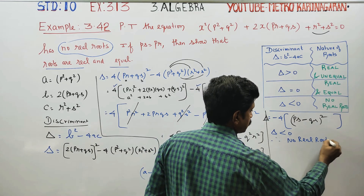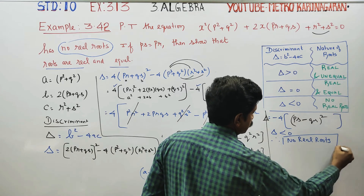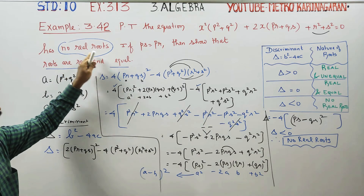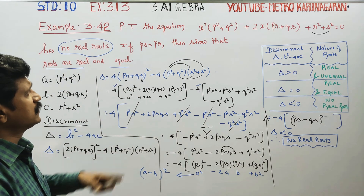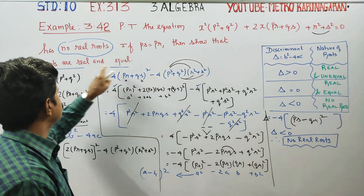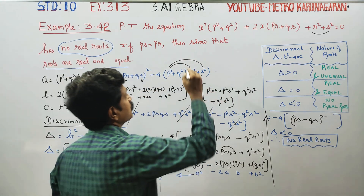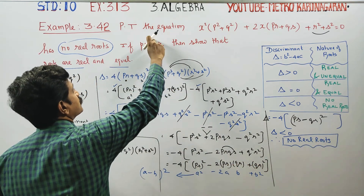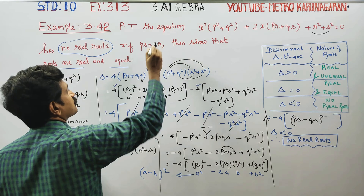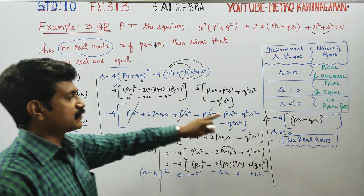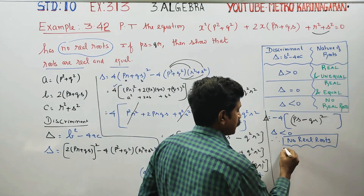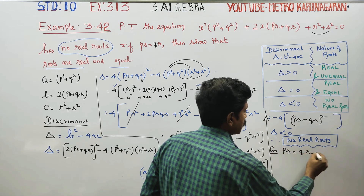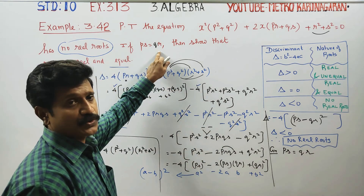Therefore, the equation has no real roots. Now for the second part: if PS is equal to QR, show that the roots are real and equal. Given: PS equals QR, we substitute this into the discriminant expression.